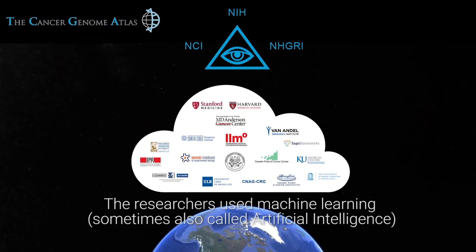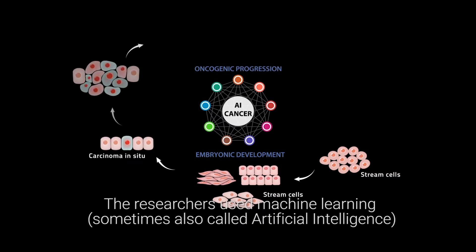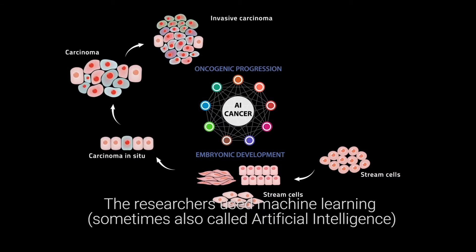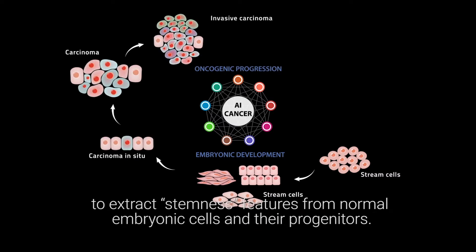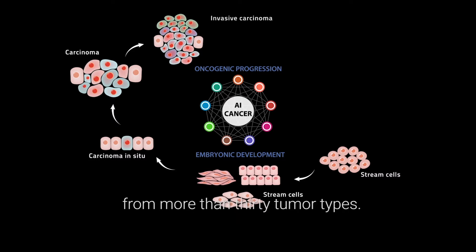The researchers used machine learning — sometimes also called artificial intelligence — to extract stemness features from normal embryonic cells and their progenitors. They then trained computer models to identify similar features in cancer cells from more than 30 tumor types.